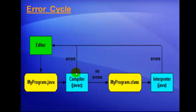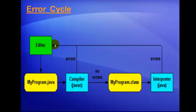At this stage there are two possibilities: either our program is error-free or our program has some syntax errors. The compiler checks for it. If some syntax errors are there, then accordingly this path is followed — that is, we have to use the editor, we have to rectify the errors, we have to save the file, and then again we have to send it to the compiler.